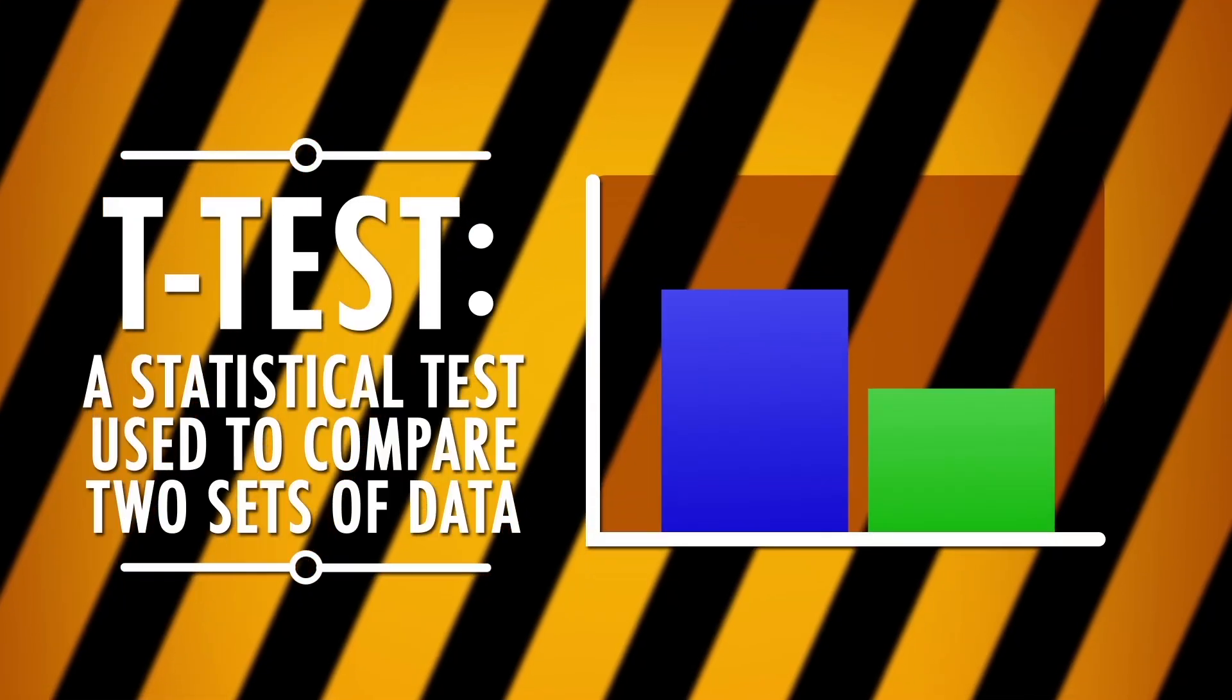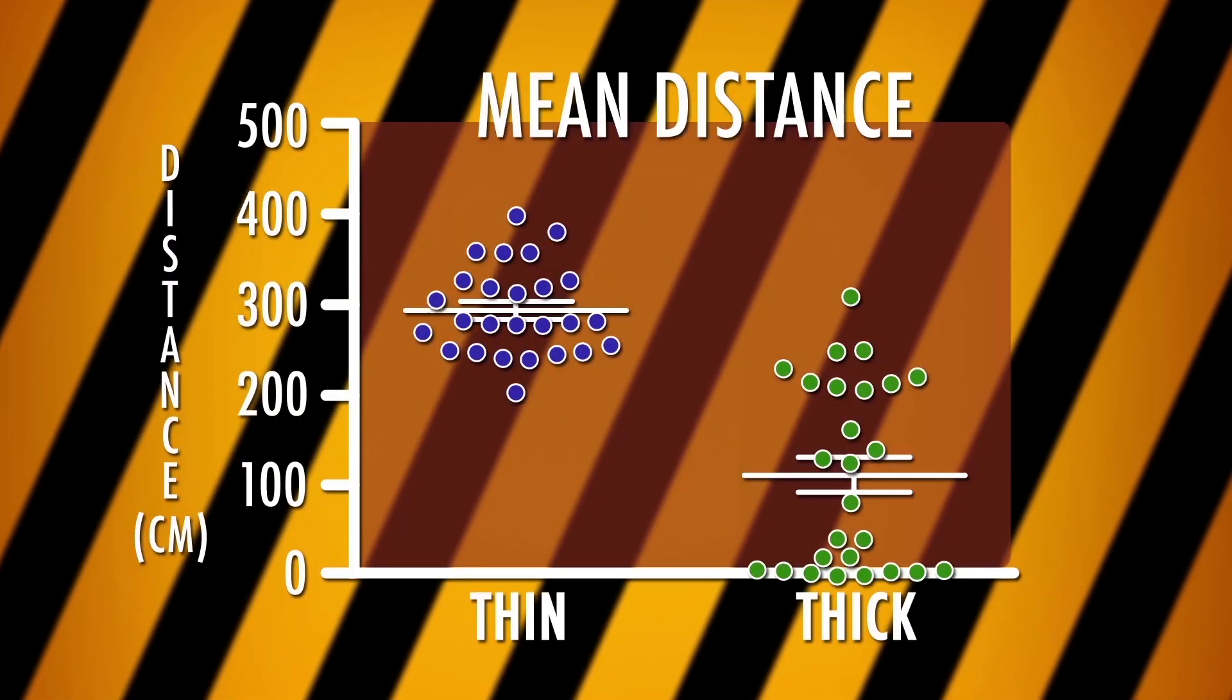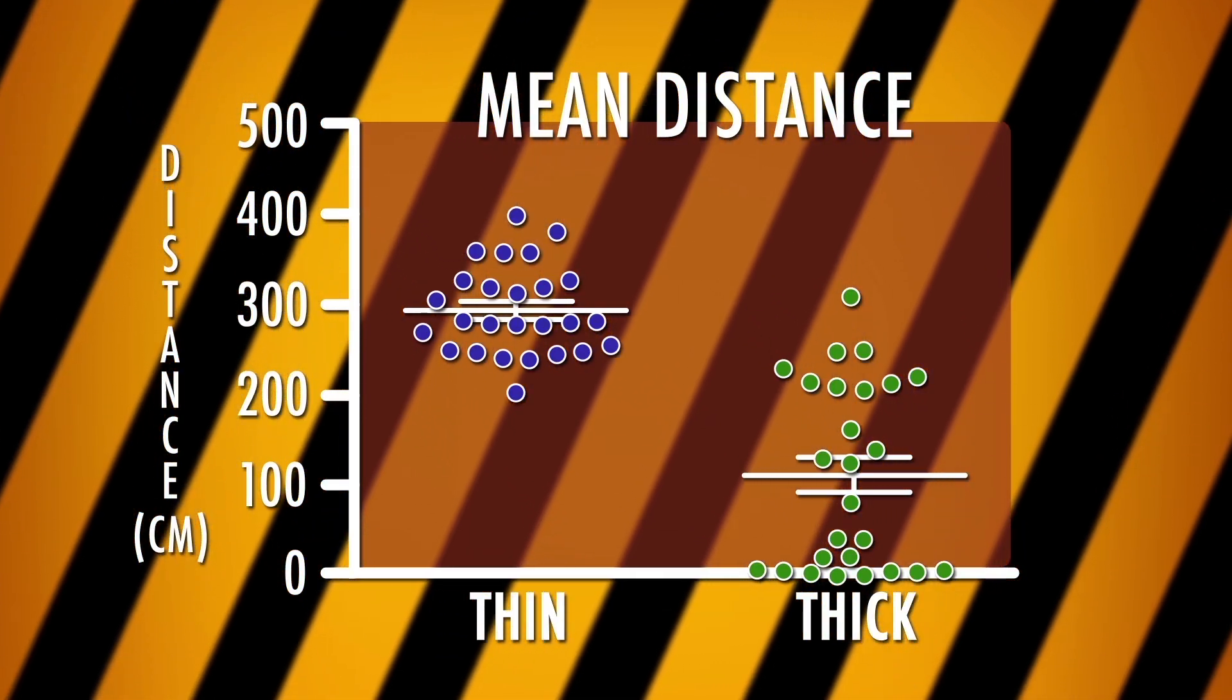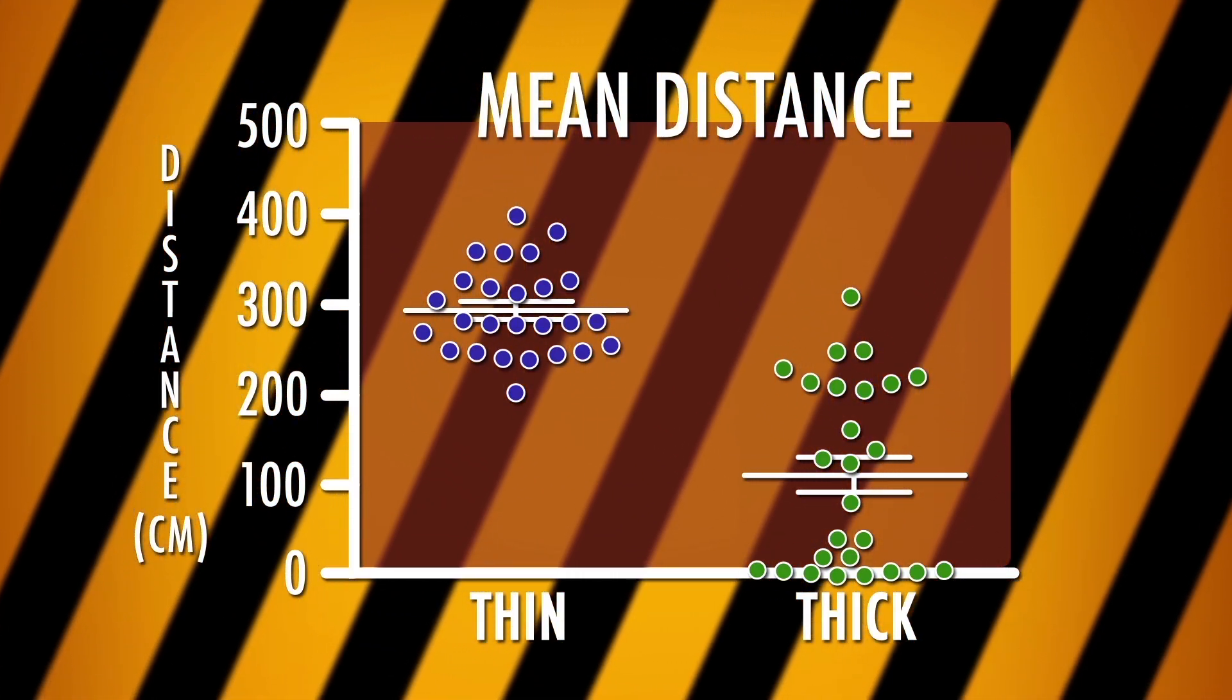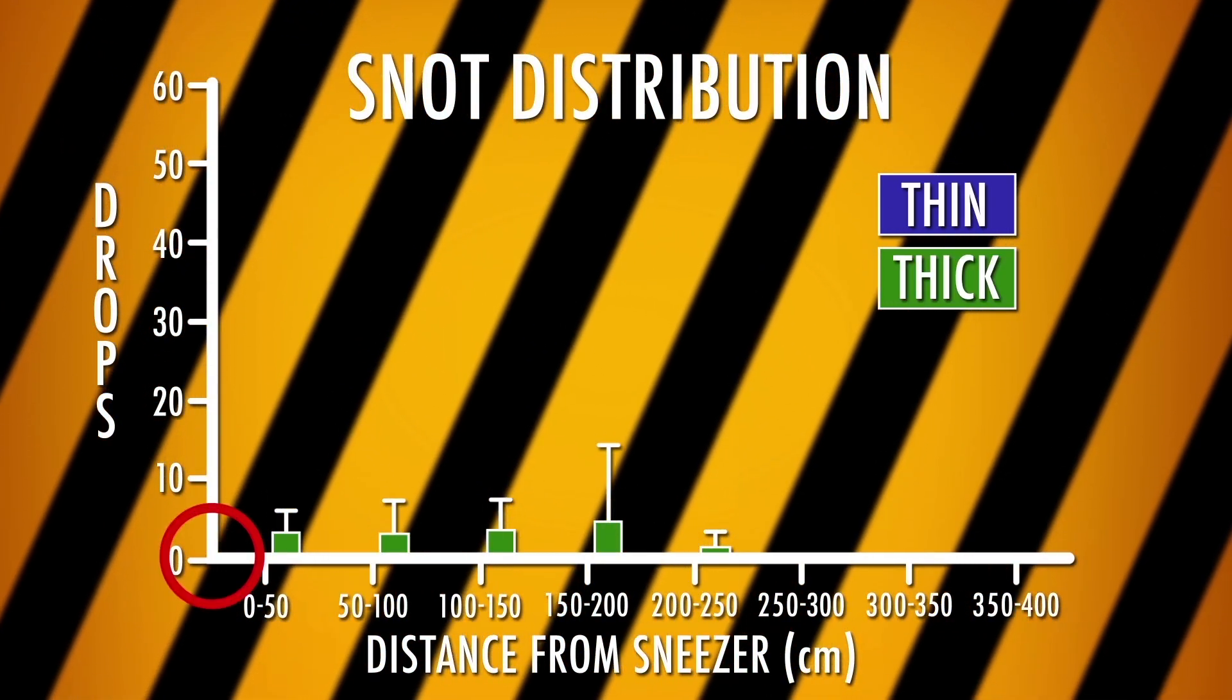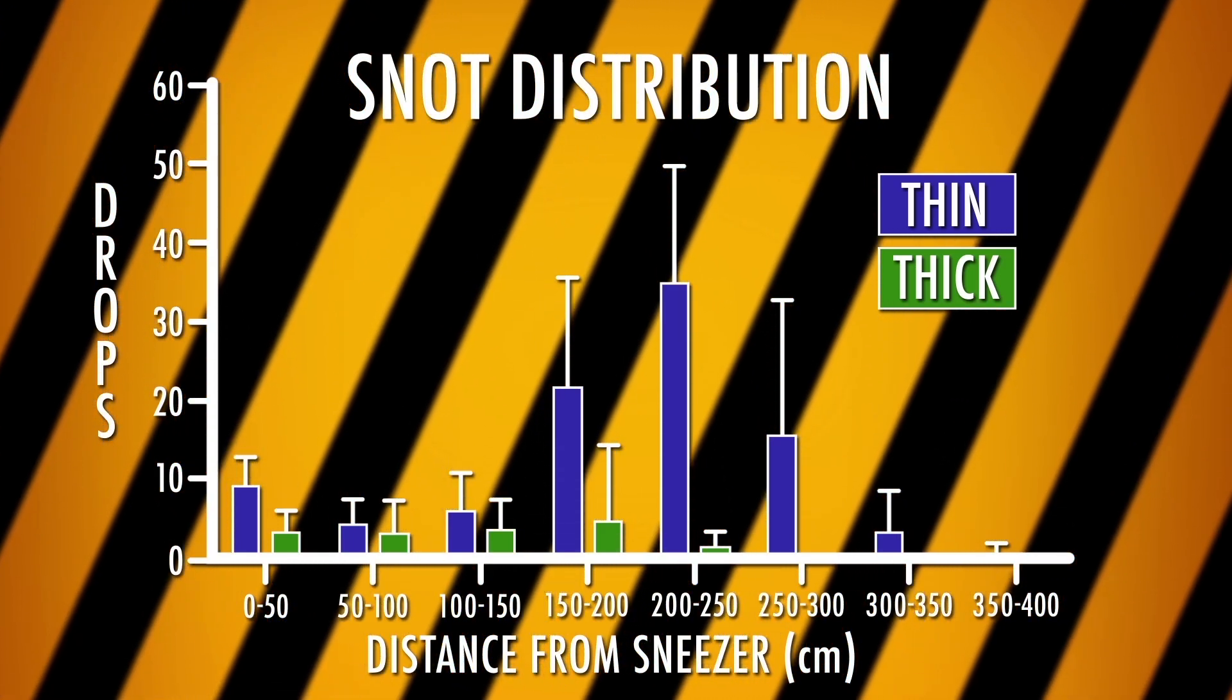Now we've got all our data, and it's time to group it together to find the mean, or the average, for the thick snot and the thin snot to find out how far they flew. Then we'll run a test called a t-test. This is a statistical test that we can use to determine if the distance that the thick snot and the thin snot flew was different enough to mean anything. My t-test shows that yes, these are different. My viscous snot also concentrated much closer to the sneeze-er than my thin snot did, and my effect sizes show that these differences are very large indeed.